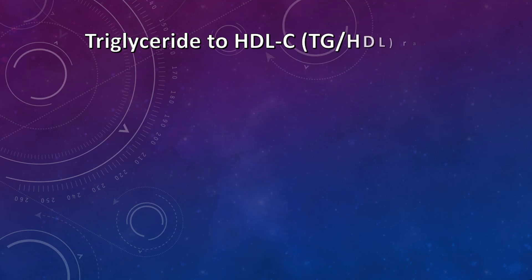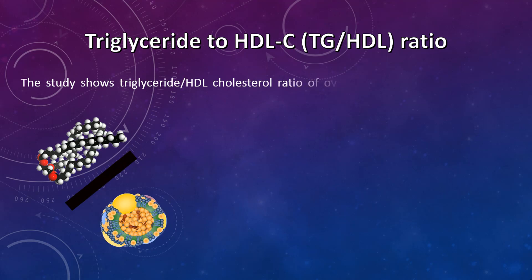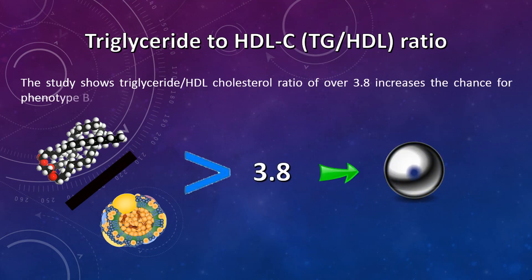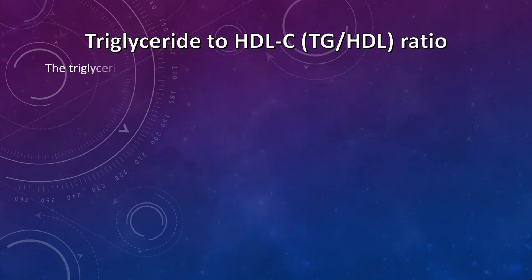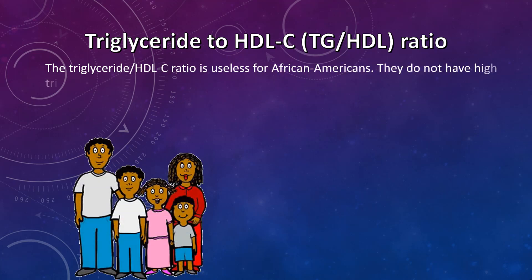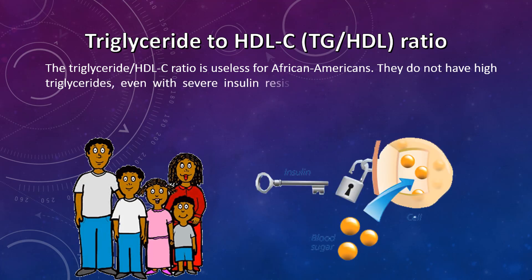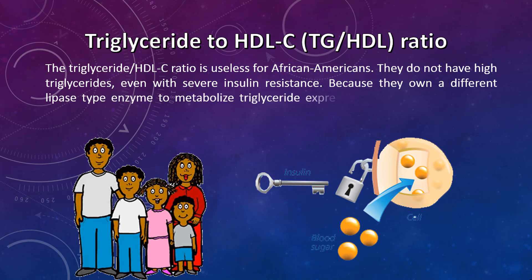Triglyceride-to-HDL ratio (Tg:HDL ratio): a study shows that a triglyceride-HDL cholesterol ratio over 3.8 increases the chance of LDL phenotype B. The triglyceride-HDL-C ratio is a better predictor of LDL phenotype B. Reference: American Journal of Cardiology, Volume 94, Issue 2, 15th July 2004. Note: the triglyceride-HDL cholesterol ratio is not useful for African Americans, as they do not develop high triglycerides even with severe insulin resistance, because they have a different lipase-type enzyme to metabolize triglyceride expression.